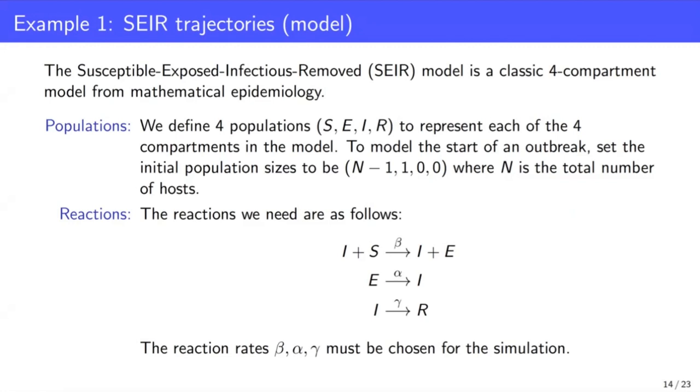So we define, in terms of our Remaster model, we define four populations, S, E, I, and R, to correspond to each of these four compartments. And to actually model the start of an outbreak, we need to define the initial population sizes. So we'd set these to something like this vector here, where the initial number of S is N minus one, where N is some total number of individuals, and the number of initially exposed individuals is just one, and the number in the other compartments is just zero.